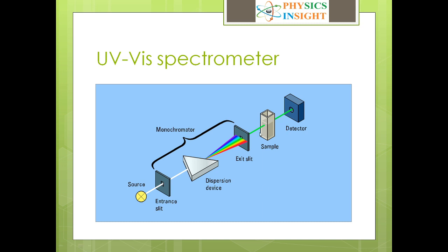This is our sample — actually this is a cuvette in which we place our sample. When the light passes through this sample, some part of the light gets absorbed, and this absorbance is detected by the detector. That is how we get our results in this spectroscopy.